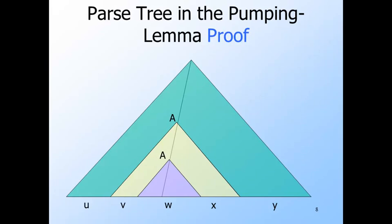Let W be the yield of the purple tree. V and X are the portions of the yield of the yellow tree that precede and follow W respectively. And let U and Y be the portions of Z that precede V and follow X respectively.